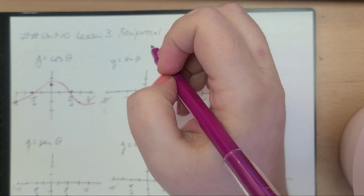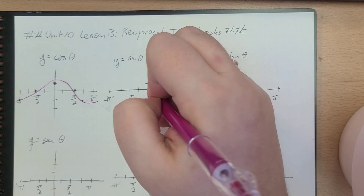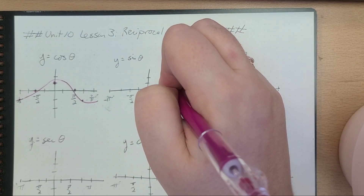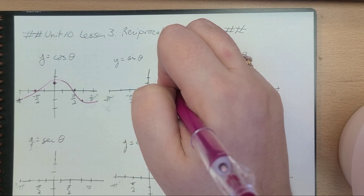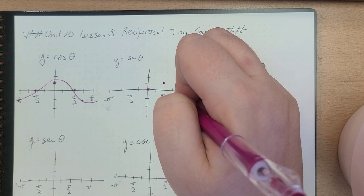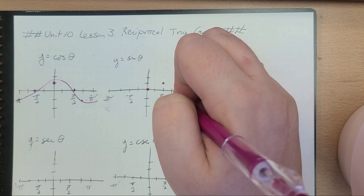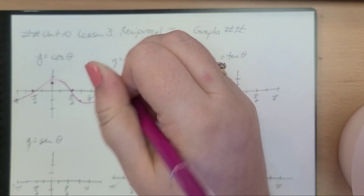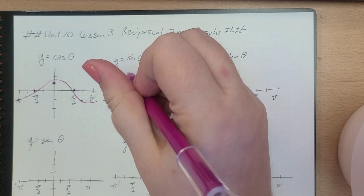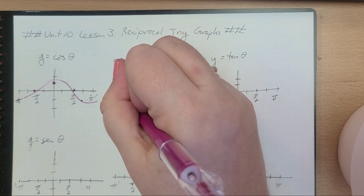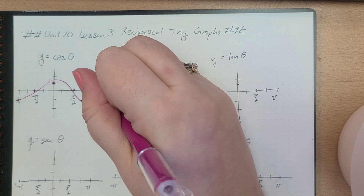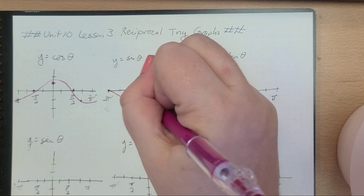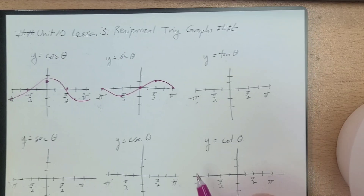For sine, we start at (0, 0). Then at π/2, we've got a point at 1. At π, we've got a point at 0. And at negative π/2, we've got a point at negative 1. So this graph looks more like this.